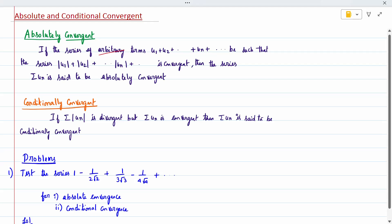When we take the modulus and get a convergent result, we say it is absolutely convergent. For conditional convergence, if the sum of |uₙ| is divergent but the sum of uₙ without modulus is convergent, then we say it is conditionally convergent.